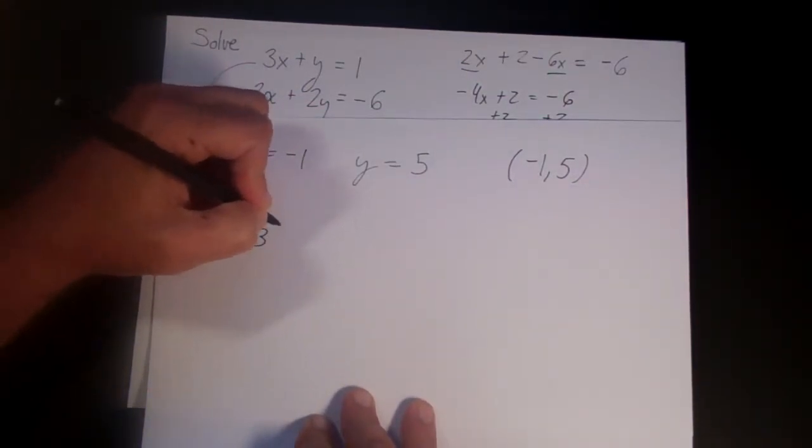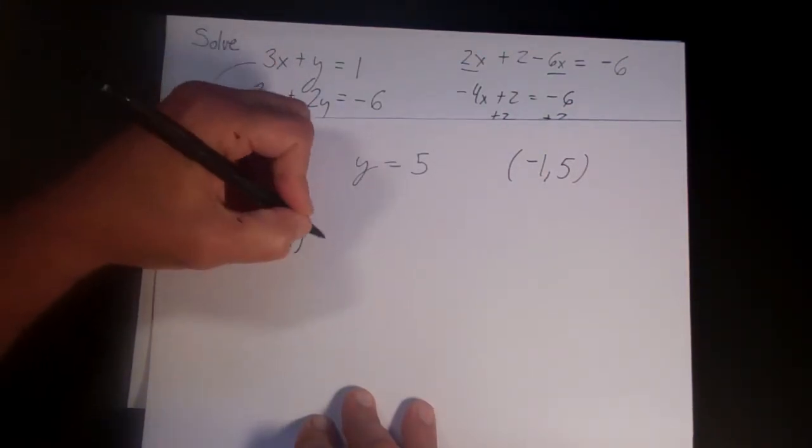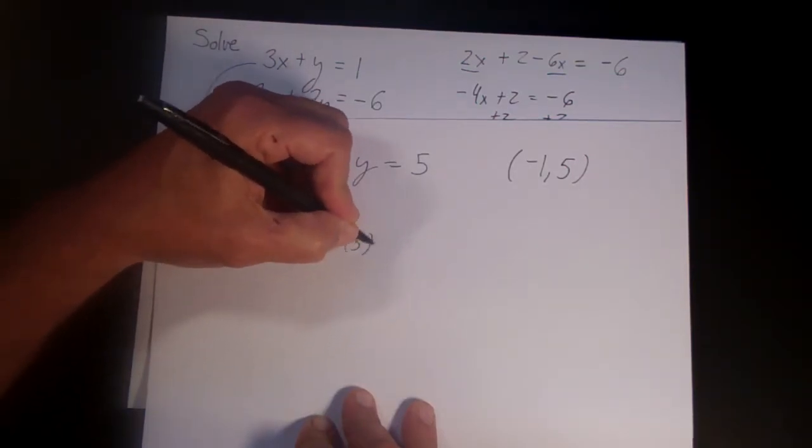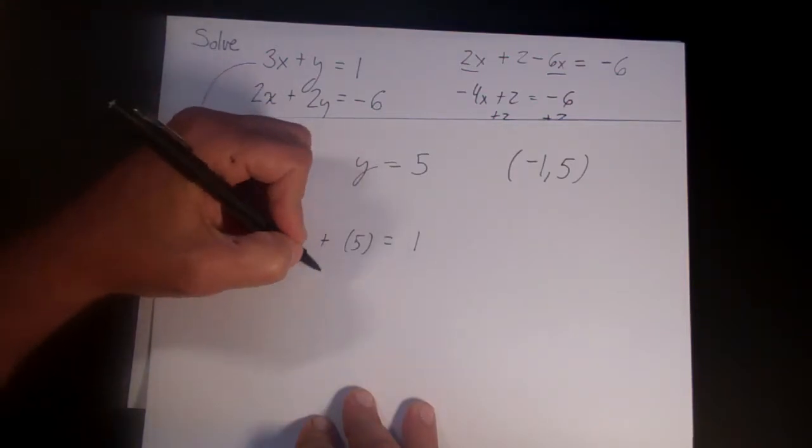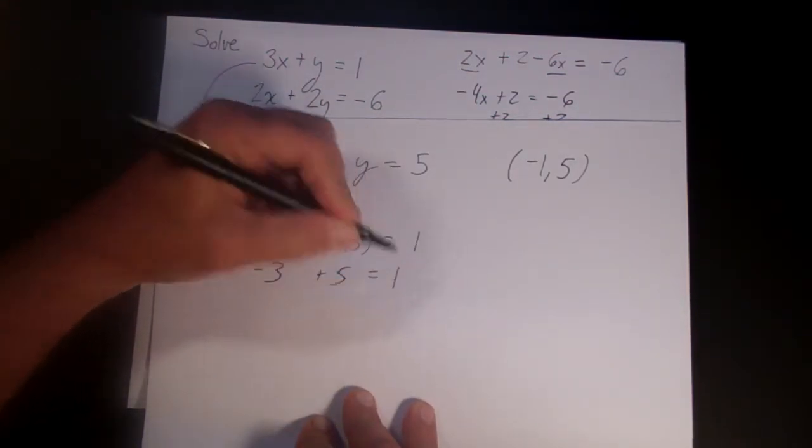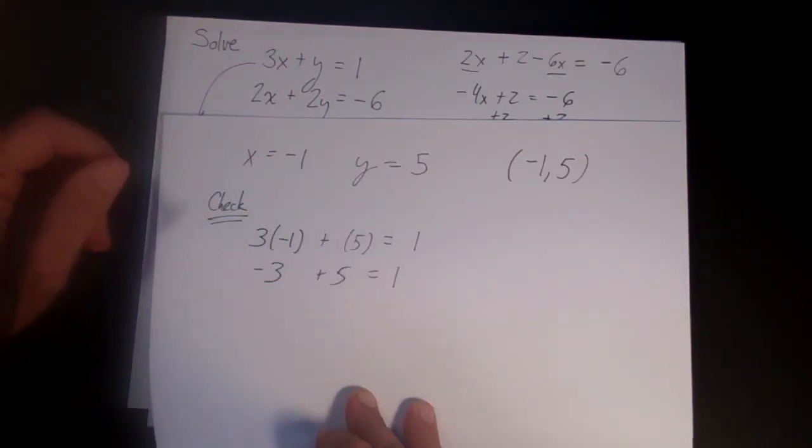So you have 3 times minus 1. Why minus 1? Because we are plugging the x in where the x goes. Plus 5 is equal to 1. That's minus 3 plus 5 is equal to 1. Which is 2 is equal to 1. Seems like I made a mistake.